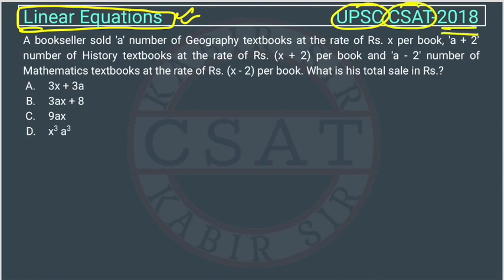A bookseller sold a number of geography textbooks at the rate of x rupees per book. So suppose there is a geography textbook and the price of each book is x rupees, and he is selling a number of quantities.